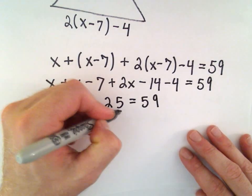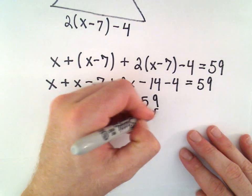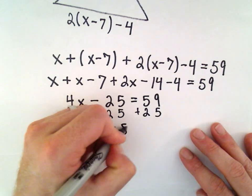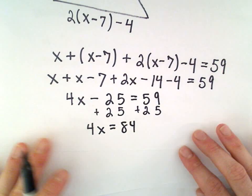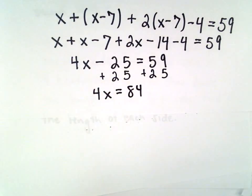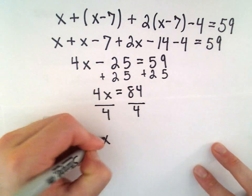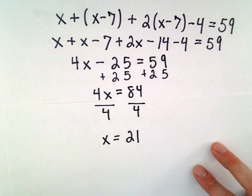We'll add 25 to both sides. That's going to give us 4x equals 84. And now, last but not least, we just divide both sides by 4. So, if we divide both sides by 4, we'll get that x equals 21.